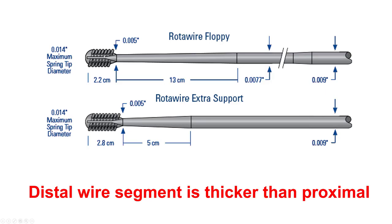Both the rotawire and the viper wire are thicker distally, and that property can be used to pull the entrapped burr back. However, do not pull very hard because that can lead to the wire being damaged.